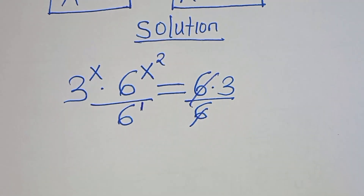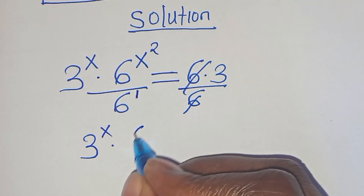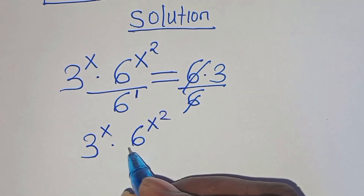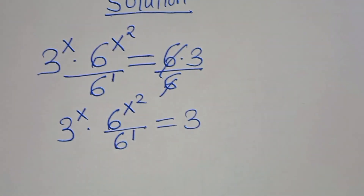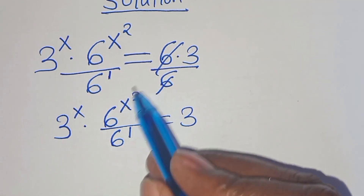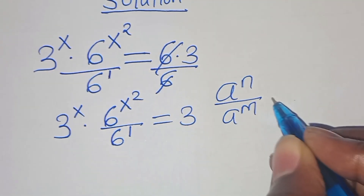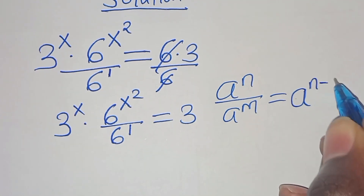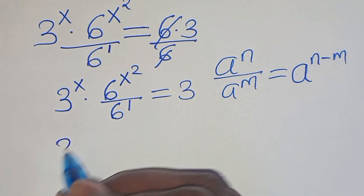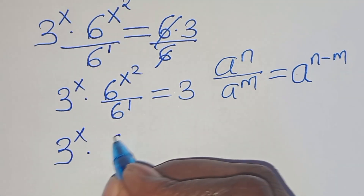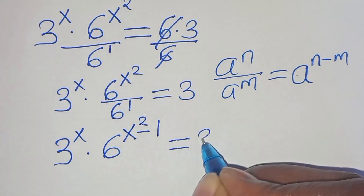So here we simplify so that now we have 3 to the power of x multiplying by 6 to the power of x squared divided by 6 to the power of 1, equal to 3. This is in the form of a to the power of n over a to the power of m, which can be expressed as a to the power of n minus m. Applying this exponent property, we have 3 to the power of x times 6 to the power of x squared minus 1, equal to 3.